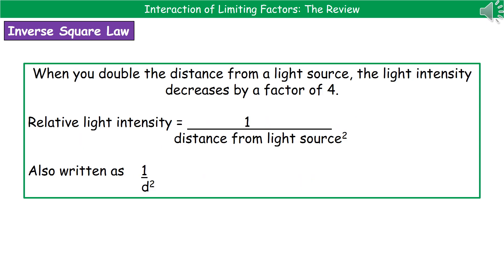One thing that we do need to be aware about is this thing called inverse square law. What that actually means is that when we double the distance from the light source, the light intensity decreases by a factor of four.